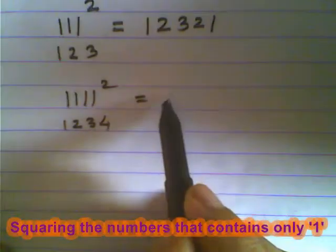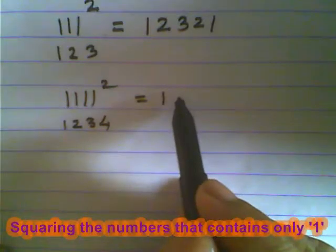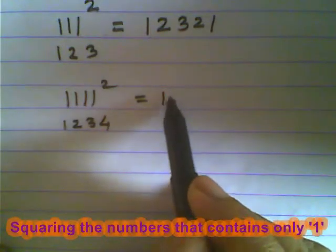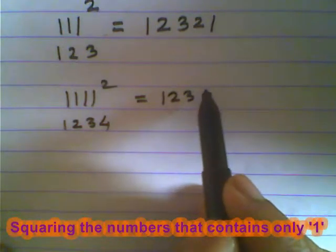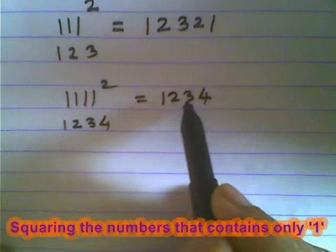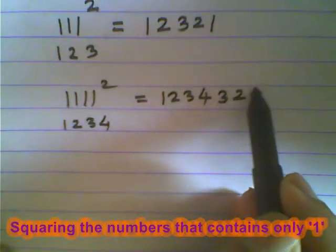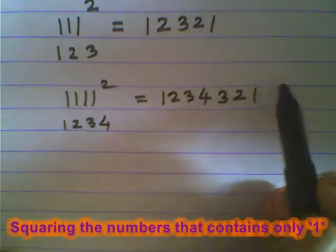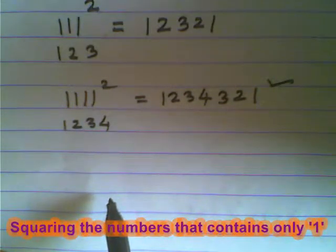We write 1, 2, 3, 4 then reverse direction 3, 2, 1 and this is the square of 1111.